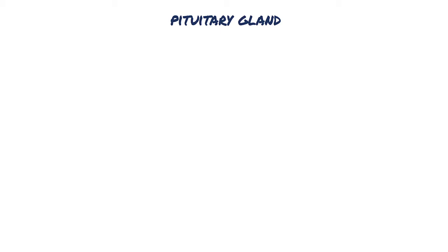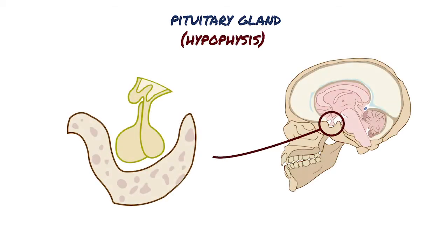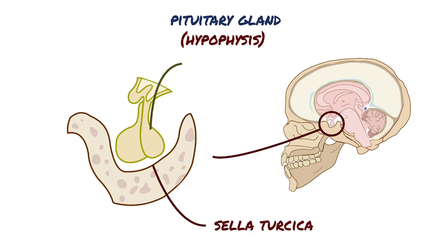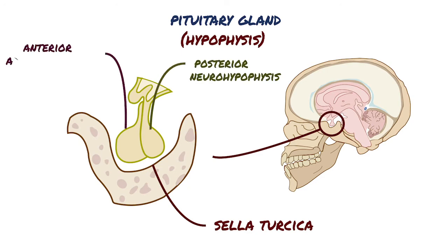The pituitary gland, or hypophysis, is a small gland which lies below the brain in a small cavity on the sella turcica. The pituitary actually consists of two glands: the posterior neurohypophysis and the anterior adenohypophysis, which are united anatomically.